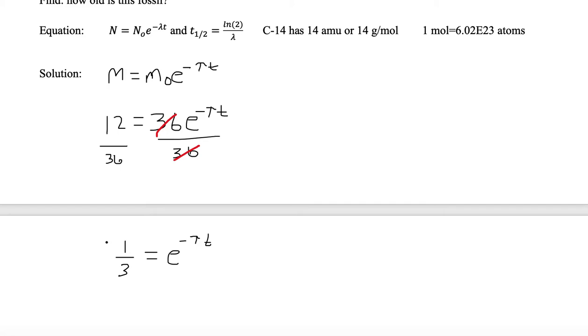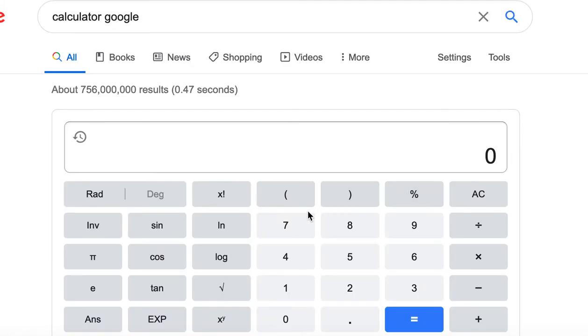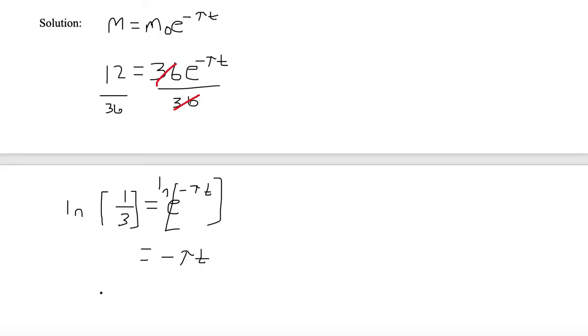So now we need to take the natural log of both sides of the equation. Natural log of e to the minus lambda t is just minus lambda t. And natural log of one-third, let's go find out what it is. So we say natural log parentheses one divided by three equals, and we have minus 1.09. The 8 is greater than 5, kicks the 9 up, so we have minus 1.1. So our value on the left-hand side is minus 1.1.